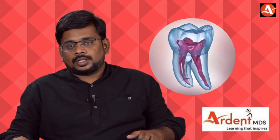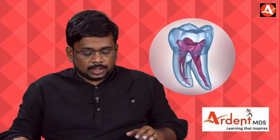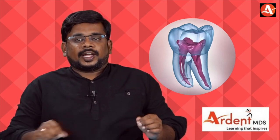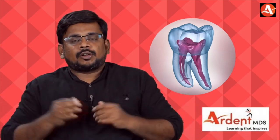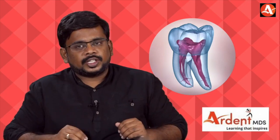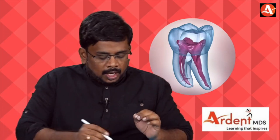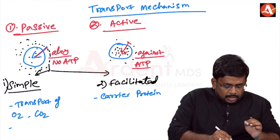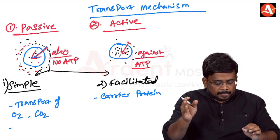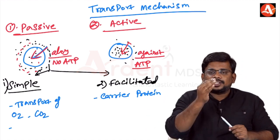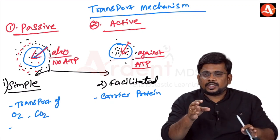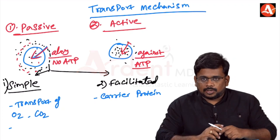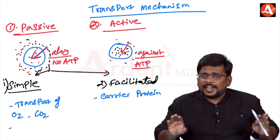This is a very important concept-based question. To understand the concept, you have to know what transport mechanisms are. There are two types: passive transport and active transport. Whenever a molecule or solute goes from higher concentration to lower concentration, that is called passive transport — along the concentration gradient — and this does not need any energy.